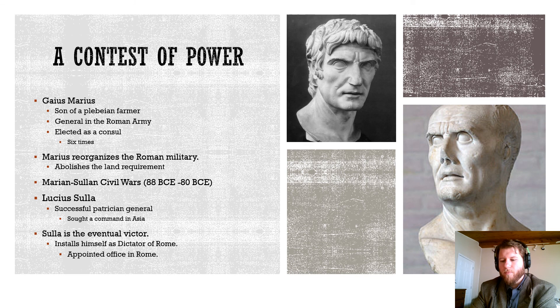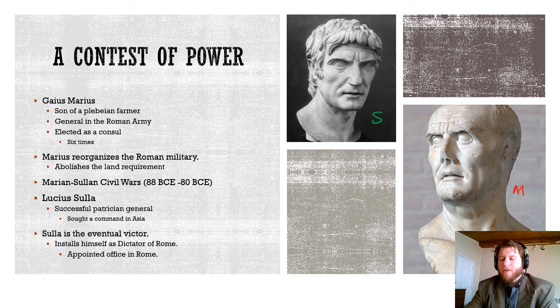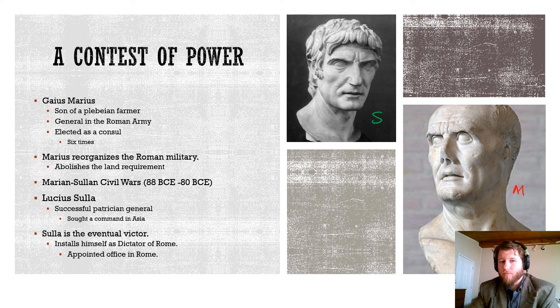Rome falls into a civil war right after their deaths. This civil war is between two individuals: Gaius Marius, the son of a plebeian farmer who worked himself up to become a general and was elected consul — holding that consulship six times, which is illegal, though people allowed him to get away with it — and Lucius Sulla, a patrician general up here.